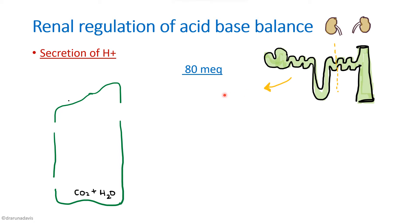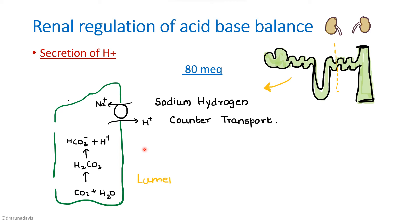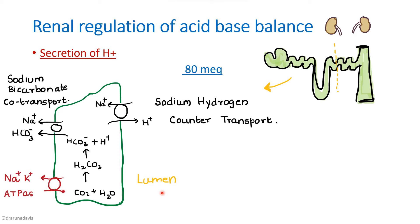Dissolved CO2 inside the cell combines with water to form H2CO3 (carbonic acid), which then dissociates to form bicarbonate and H+. This H+ is secreted out into the lumen by the sodium-hydrogen countertransport — when sodium gets in, hydrogen goes out. The bicarbonate is reabsorbed by the sodium-bicarbonate co-transport, all driven by the sodium-potassium ATPase pump. So in the early part of the nephron, H+ secretion occurs by secondary active transport.